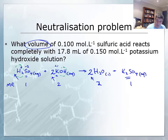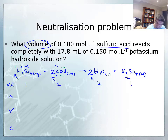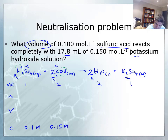Now I have three very important variables I need to consider: number of moles, which I'm going to put under the mole ratio because that's important; volume, which I put next because number of moles divided by volume is equal to concentration. So what do I already know? For the sulfuric acid, I know that the concentration is 0.1 molar, and for the potassium hydroxide, I know that its concentration is 0.15 molar, and also that it has a volume of 17.8 mLs, which I'm going to convert straight away into 0.0178 liters.